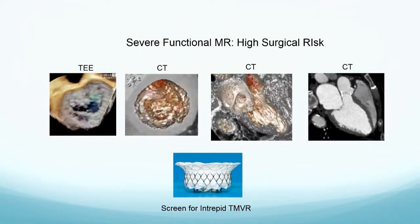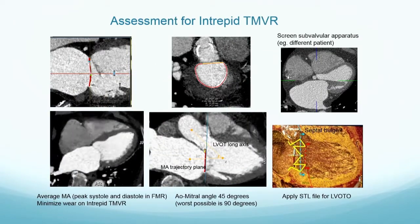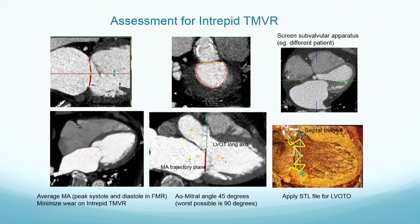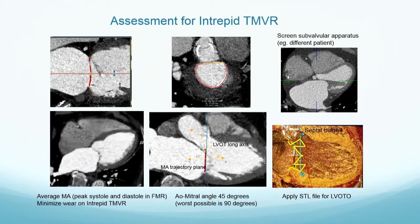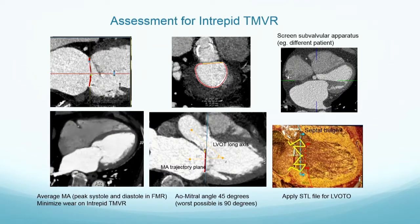Here's a case with severe functional mitral insufficiency in a high-risk surgical patient, planning for an Intrepid valve. We perimeter the posterior portion, draw a line from trigone to trigone, and create our size. You want to interrogate it specifically to look for the subvalvular apparatus. In functional MR, you actually average peak systole and diastole for sizing, which helps minimize wear on the valve. We also look at left atrial height, then create an aortomitral angle in systole. The worst scenario is when it's completely perpendicular. You then have an STL file that mimics the mitral valve, place that in the LVOT, and make your measurements to see if it will fit.